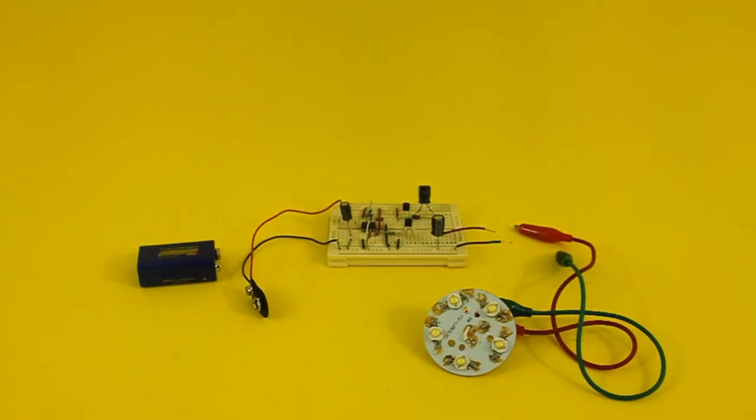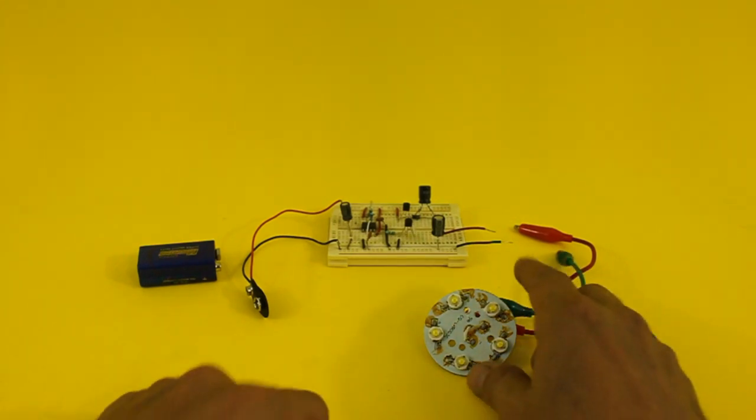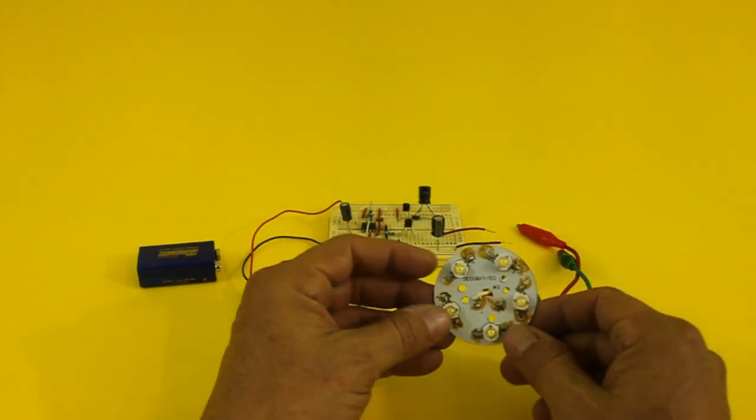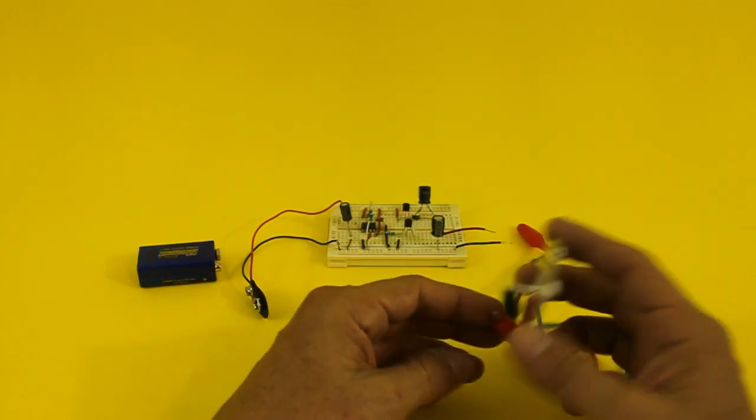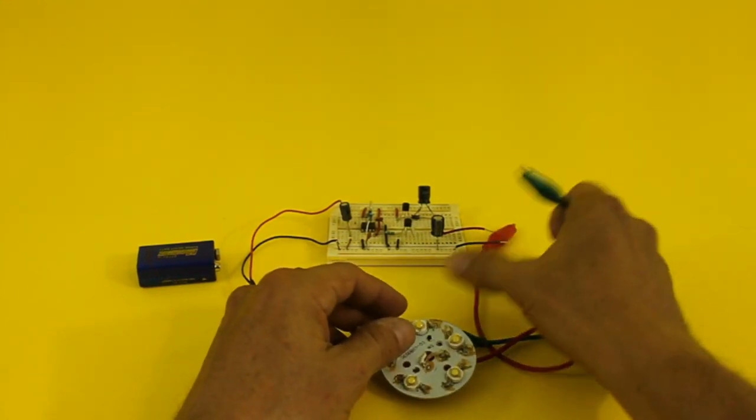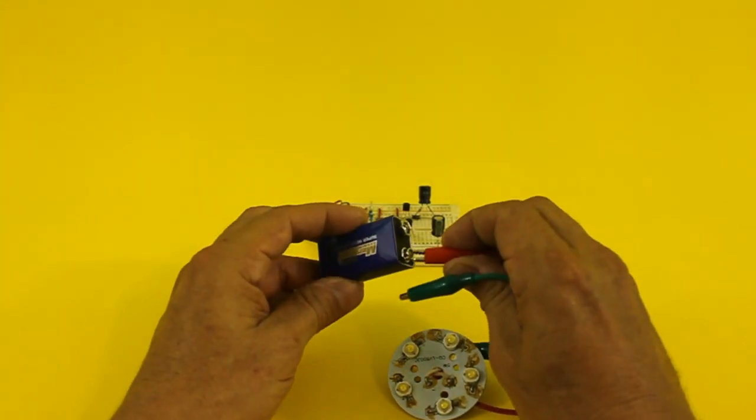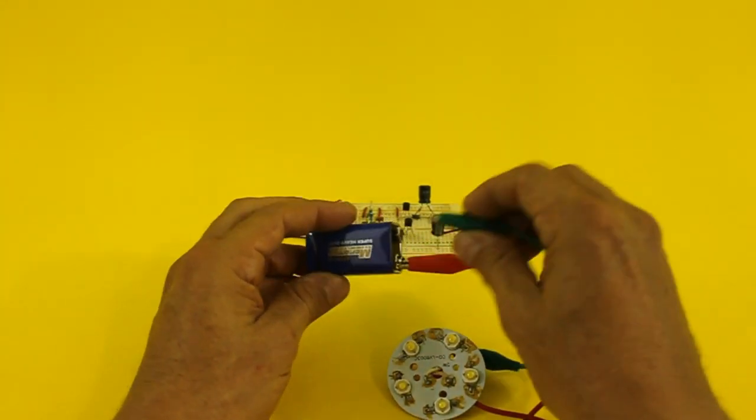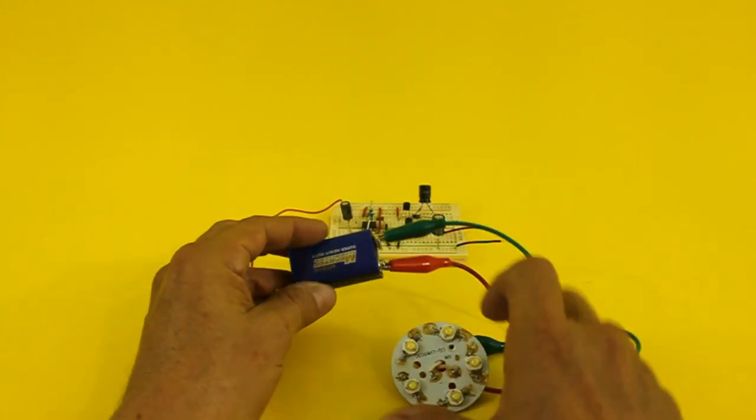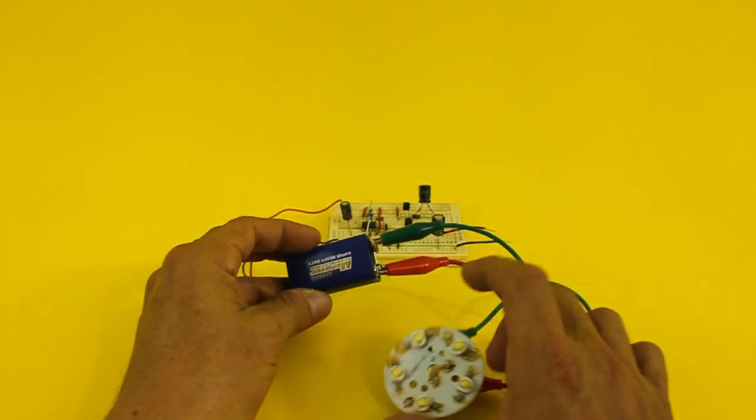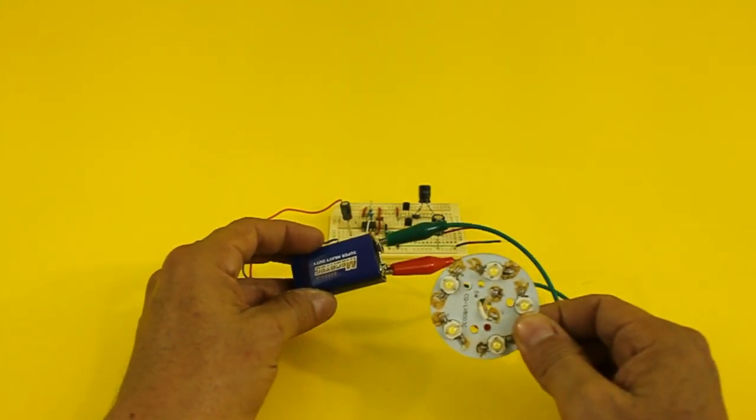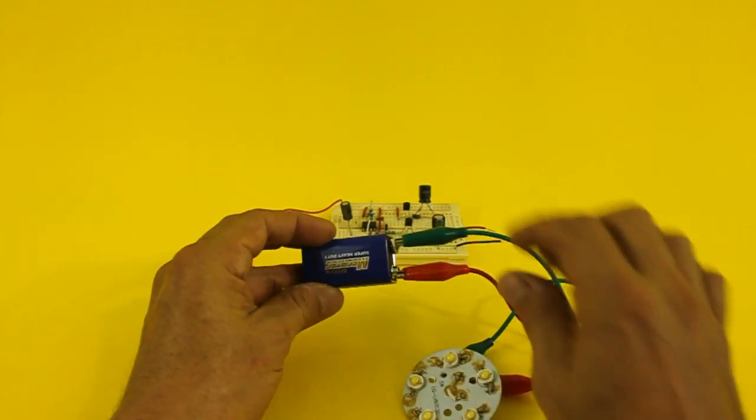Now I am going to test the circuit using this LED assembly that I got from an old lamp. Let's see that if we connect the LED assembly directly to the 9 volt battery, it does not work because the voltage is not enough to make the LED assembly work.